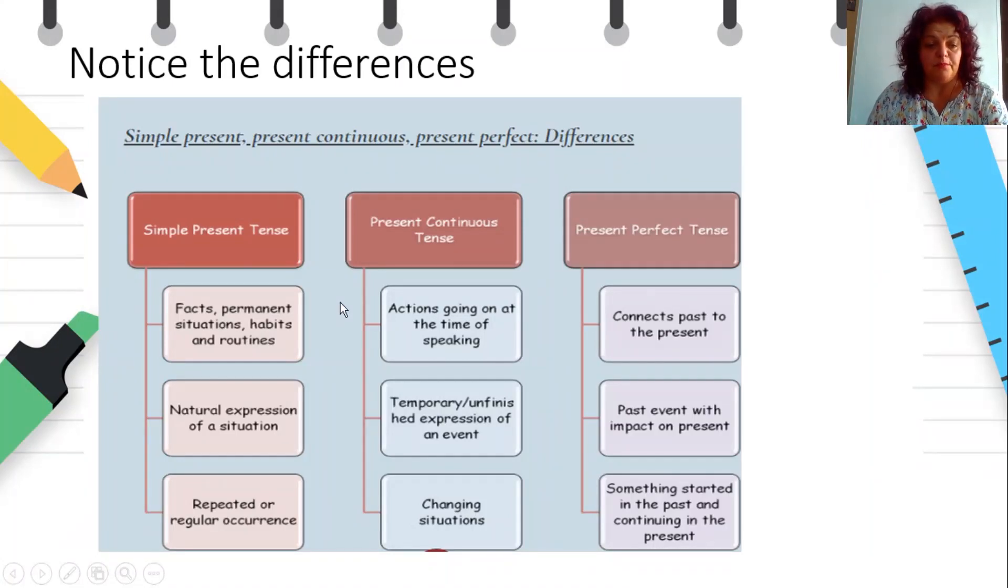Now, what are the differences between present simple, present continuous tense, and present perfect tense? First, present simple tense. We usually express facts, permanent situations, habits, and routines. Natural expressions of the situation, repeated or regular occurrence. Present continuous tense we usually express actions going on at the time of speaking, temporary events, and changing situations. Present perfect tense we usually connect past with the present. Past events with the impact of the present. Something started in the past and continuing in the present.